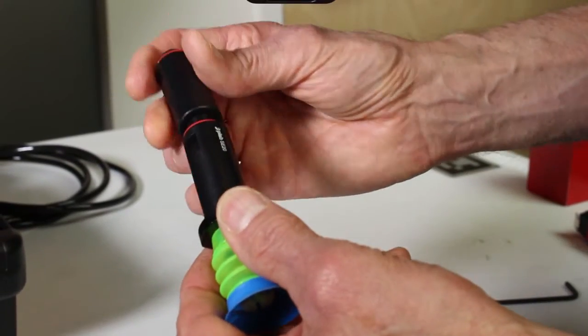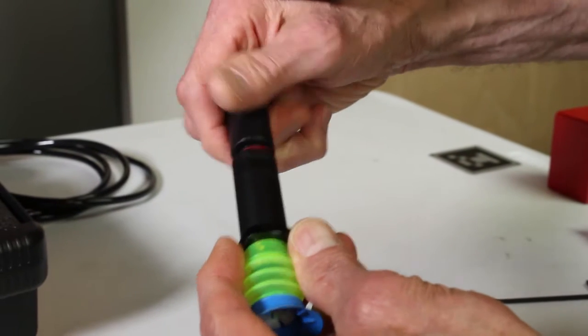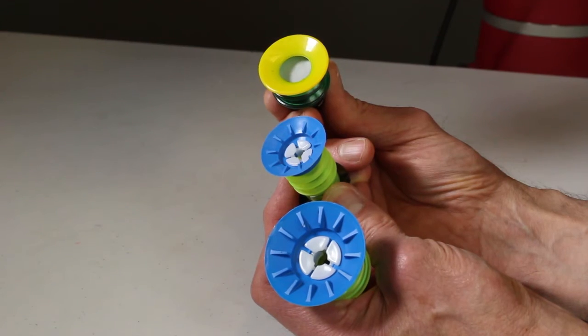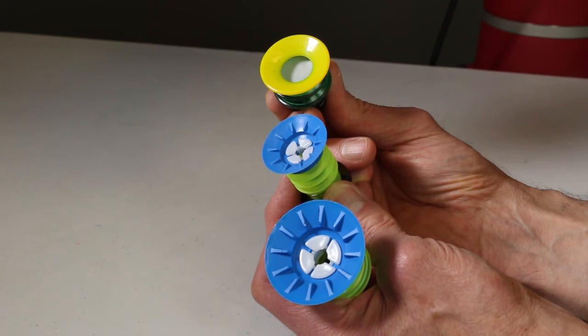Optionally, you can add one or two extensions to reach inside a box. Then, add an appropriate size vacuum cup from the gripper kit.